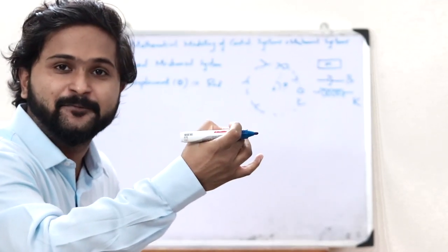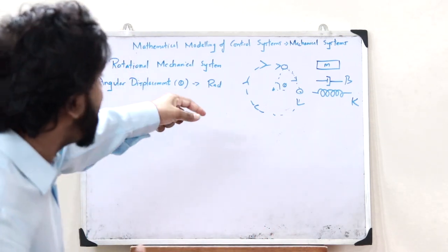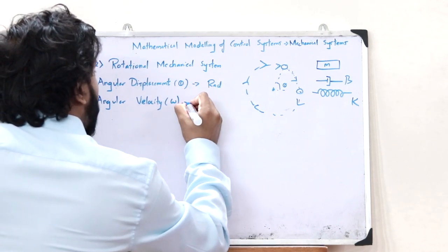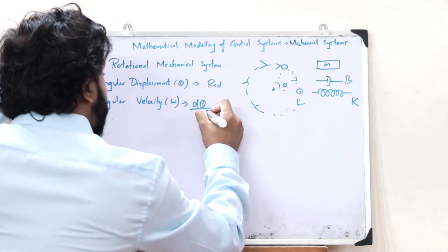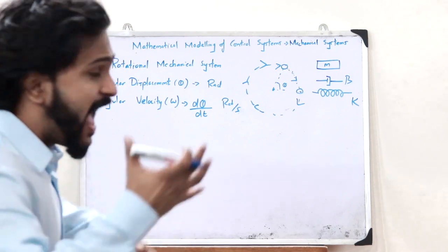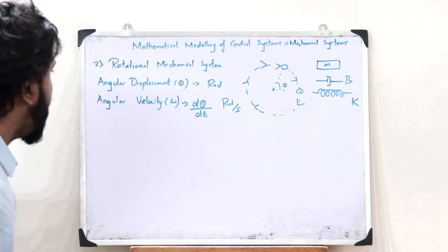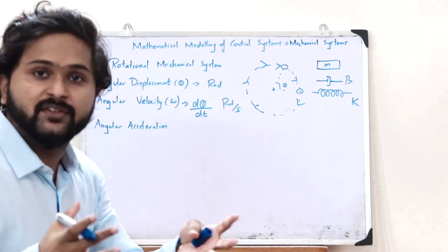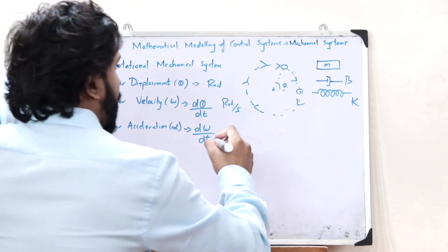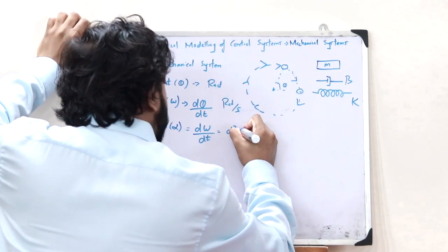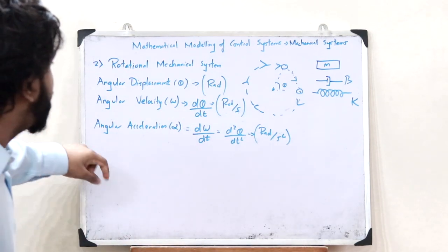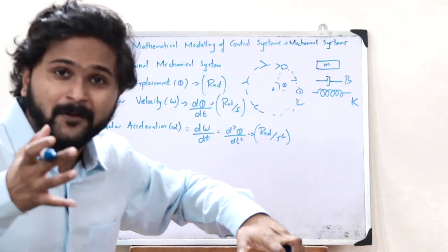Just like velocity in translational motion, here we have angular velocity — the rate at which angular displacement changes. It is represented by omega (ω), given as dθ/dt, with units of radians per second. And just like acceleration in translational motion, we have angular acceleration — the rate of change of angular velocity — represented by alpha (α), given as dω/dt, which equals d²θ/dt², with units of radians per second squared.